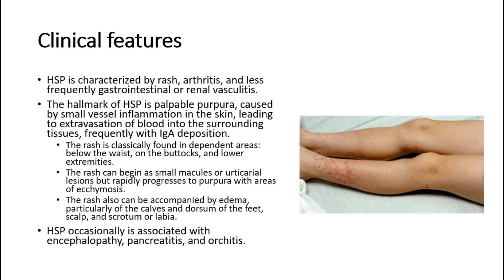The hallmark of HSP is palpable purpura, caused by small vessel inflammation in the skin, leading to extravasation of blood into the surrounding tissues, frequently with IgA deposition. The rash is classically found in dependent areas below the waist, on the buttocks, and lower extremities. The rash can begin as small macules or urticarial lesions, but rapidly progresses to purpura with areas of ecchymosis.